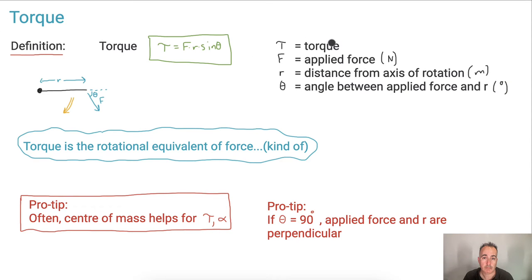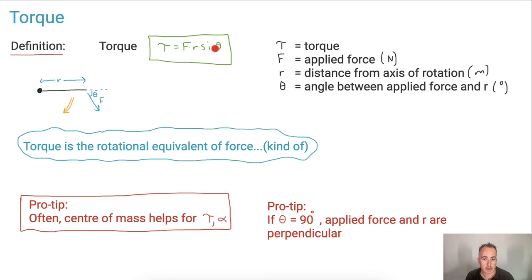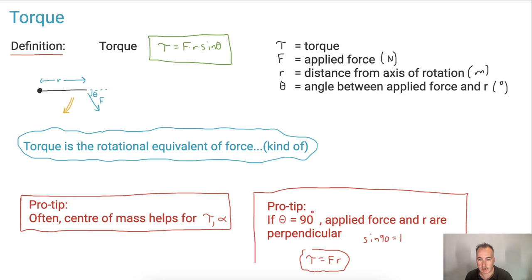So how can we figure out the units for torque? Let's go a step further. Sometimes the center of mass and alpha, the angular acceleration, are going to help. Here's a pro tip: if theta equals 90 degrees — in other words, if the angle between the radius and the applied force is 90 degrees — then sine of 90 is just 1. So the torque simplifies to just F times R. That's a nice little pro tip that's going to help you out.